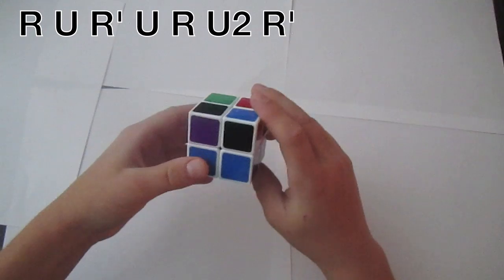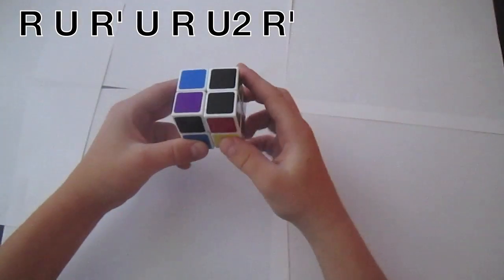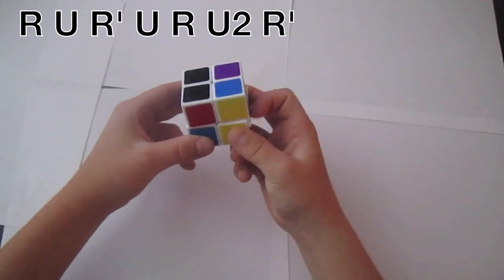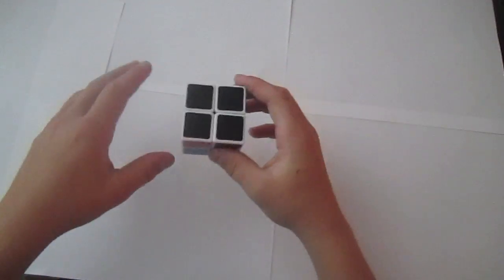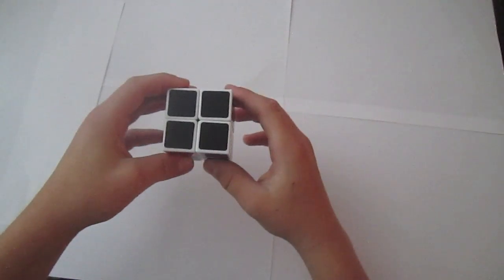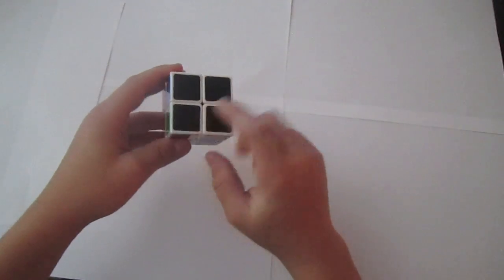The algorithm is R U R prime U R U U R prime. If you have more than one, what you're going to do is just keep doing the algorithm and it will eventually be solved. It'll eventually give you one piece.